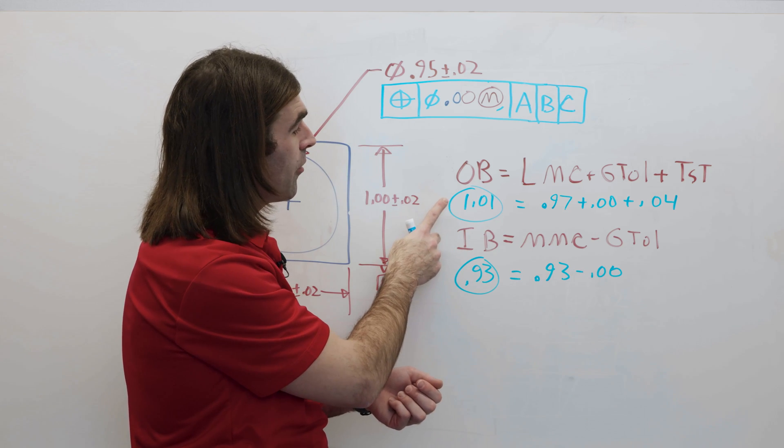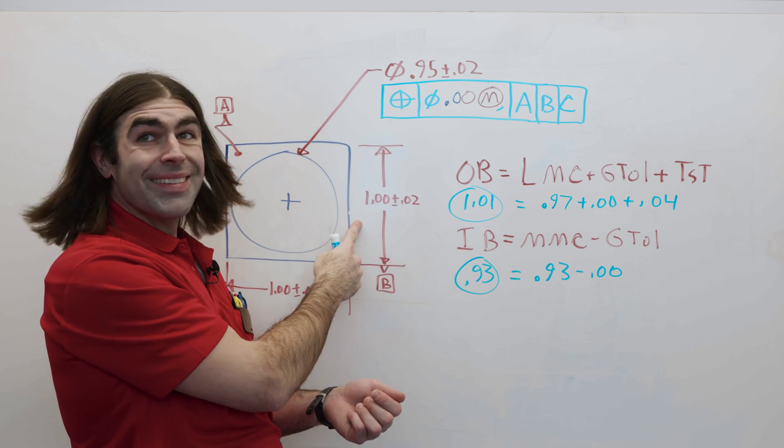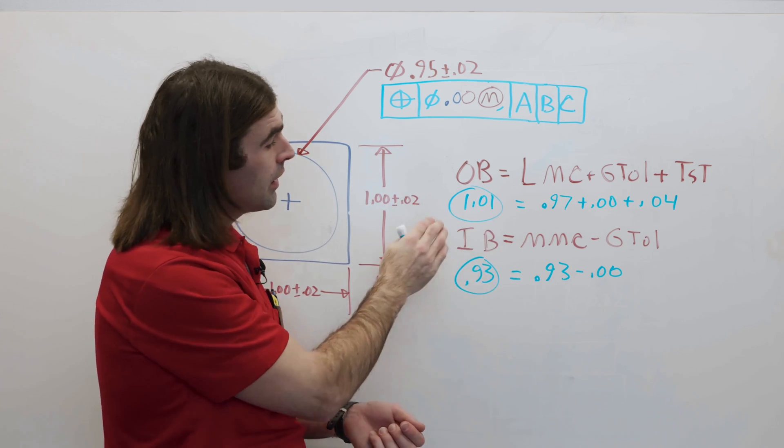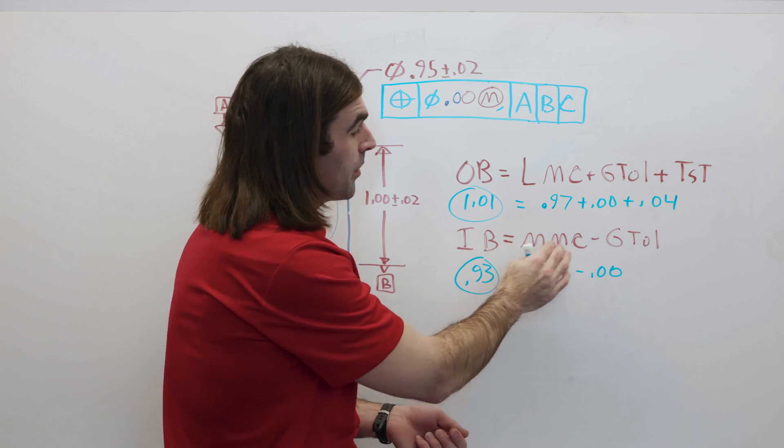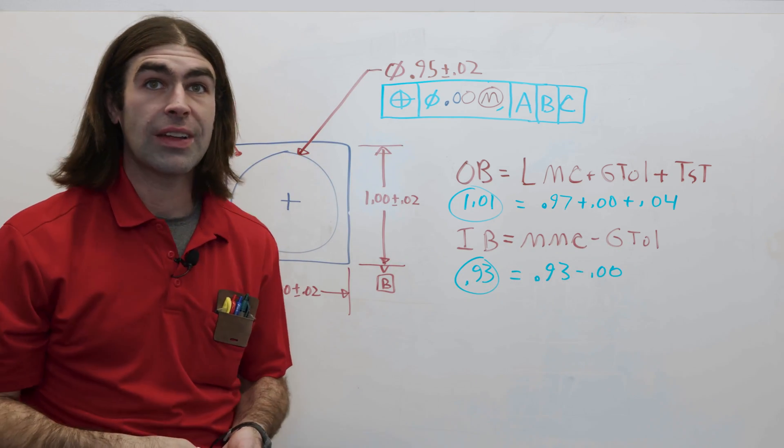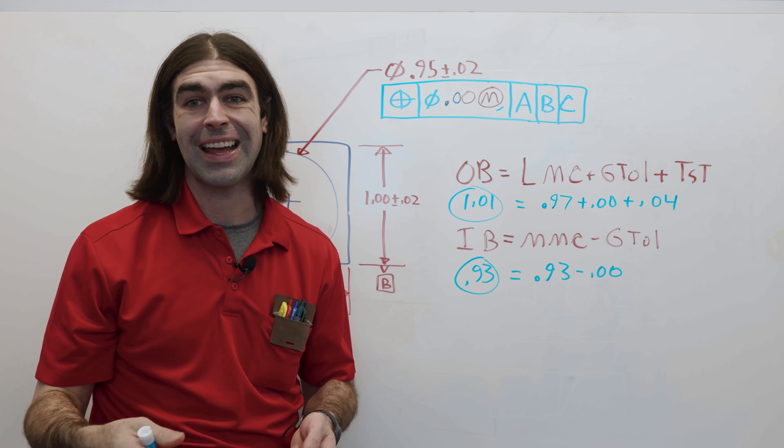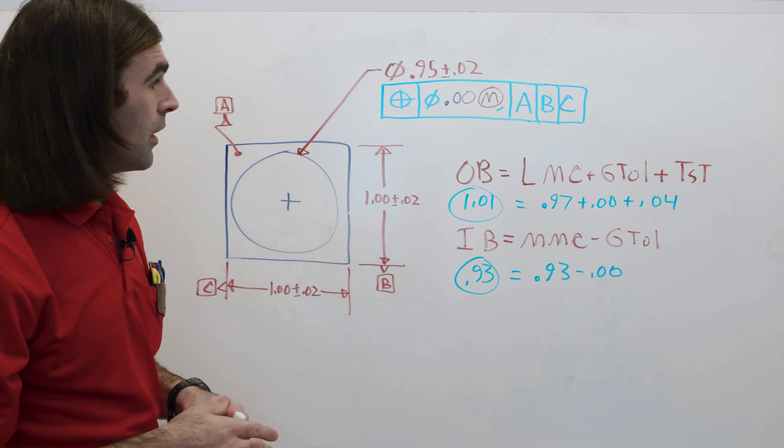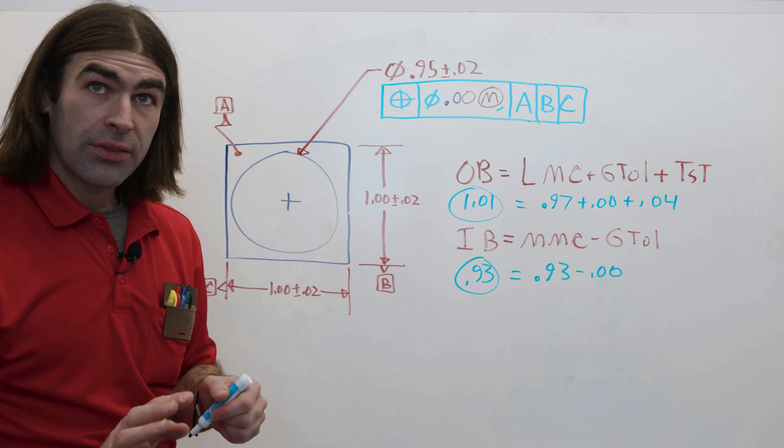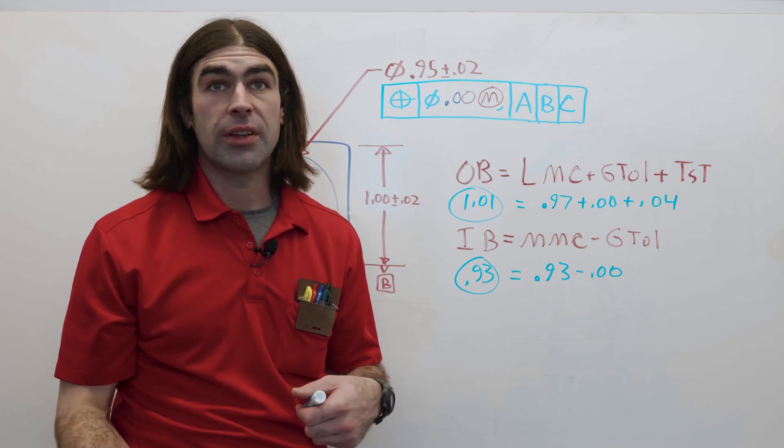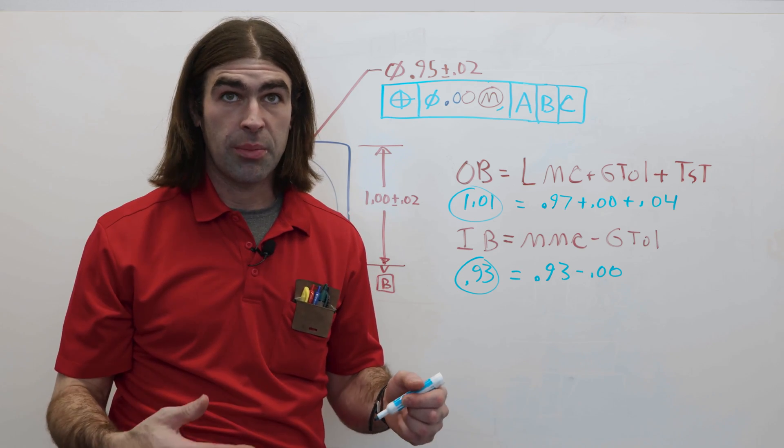You have the full size tolerance range. So, in this case, our outer boundary is 1.01, still not good enough, okay? And then our inner boundary is just our MMC minus our geometric tolerance. It's going to be 0.93 in this case. So, 0 MMC isn't going to work for us without changing the nominals. Now, that's always a possibility.